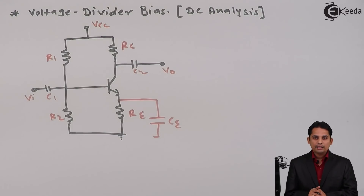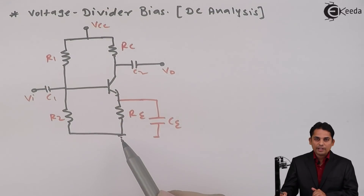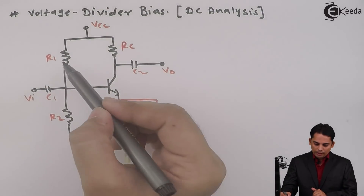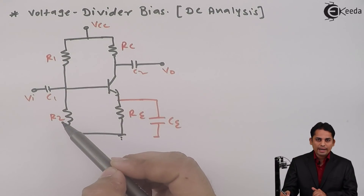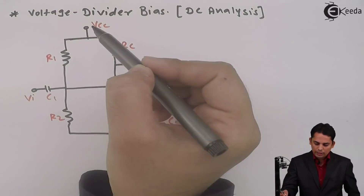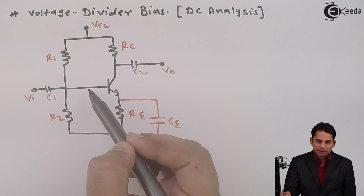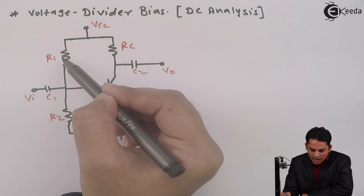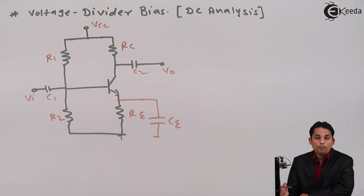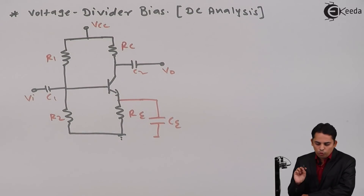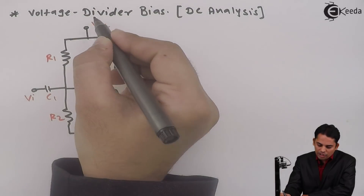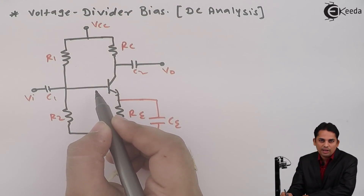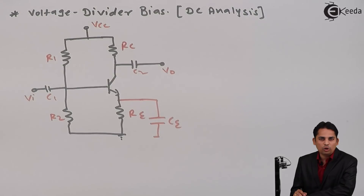In this voltage divider bias circuit, resistors R1 and R2 are called biasing resistors, which are used to divide the voltage of VCC across the base of the transistor. Hence this circuit is called the voltage divider bias circuit.